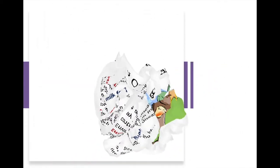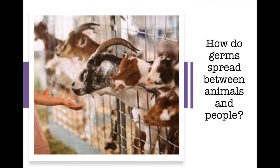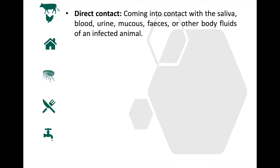So how do germs spread between animals and people? Because of the close connection between people and animals, it's important to be aware of the common ways people can get infected with germs that can cause zoonotic diseases. These can include, first, direct contact — coming into contact with the saliva, blood, urine, mucus, feces, or other body fluids of an infected animal. An example would be petting or touching animals, or when you are bitten by them or get scratches.